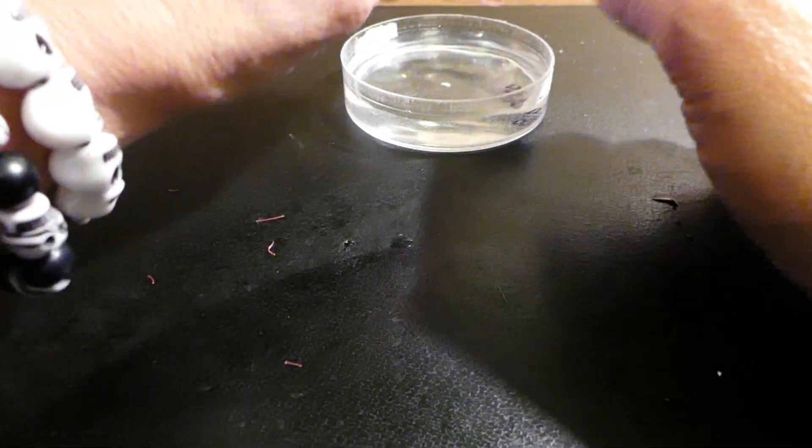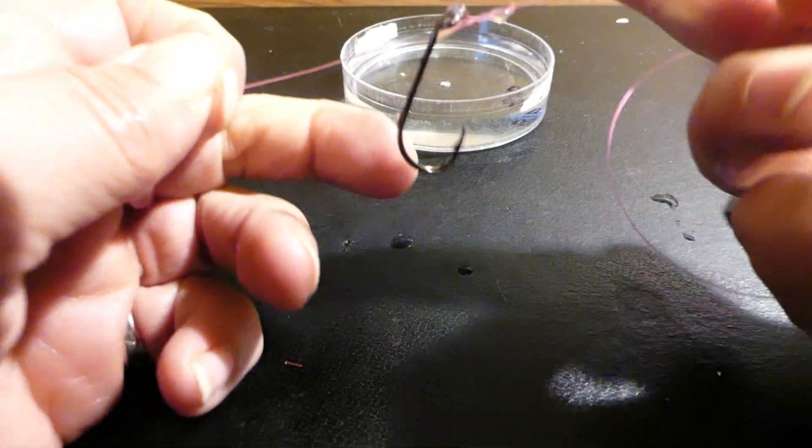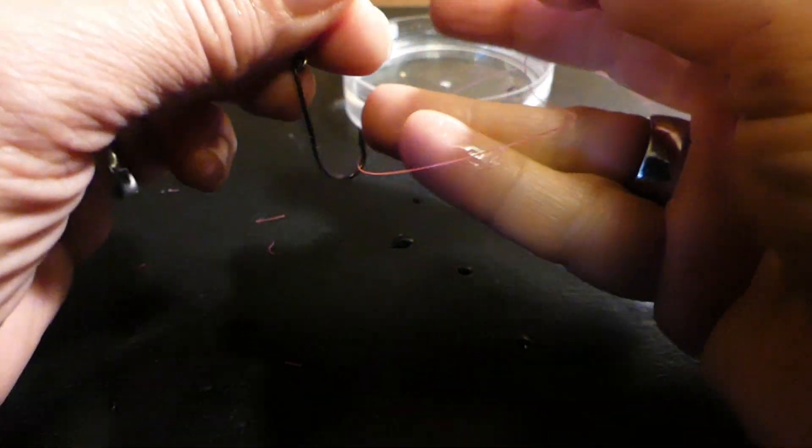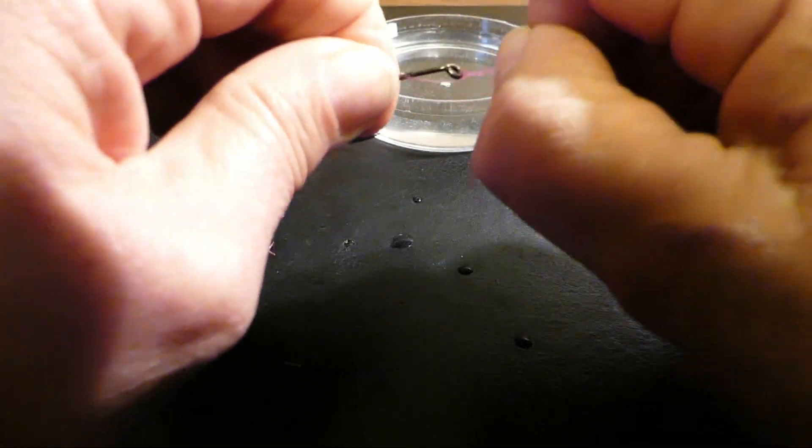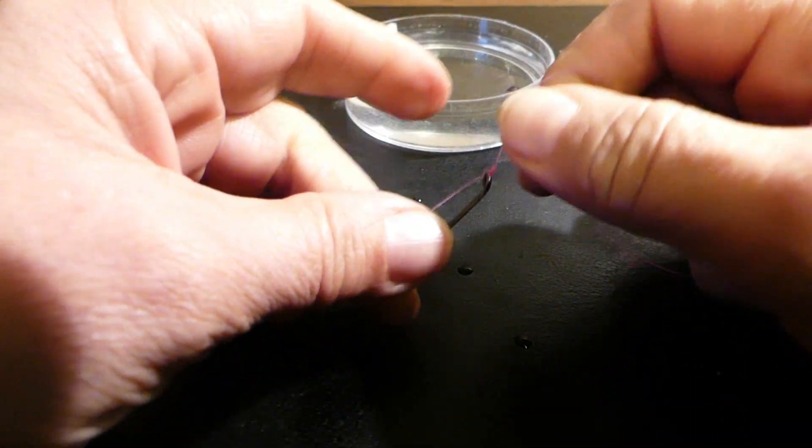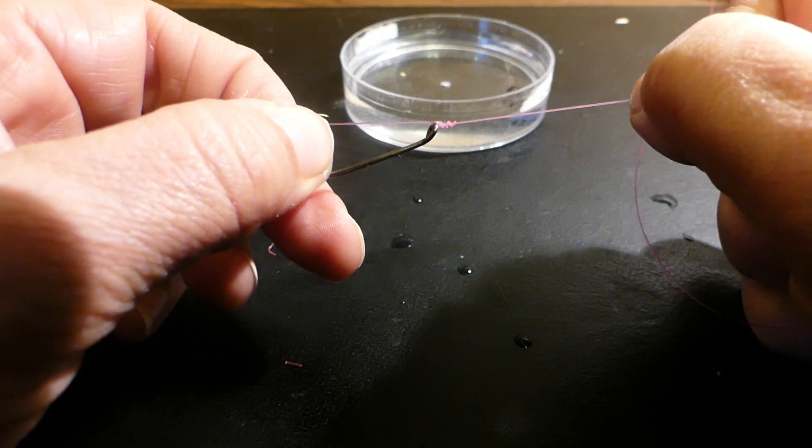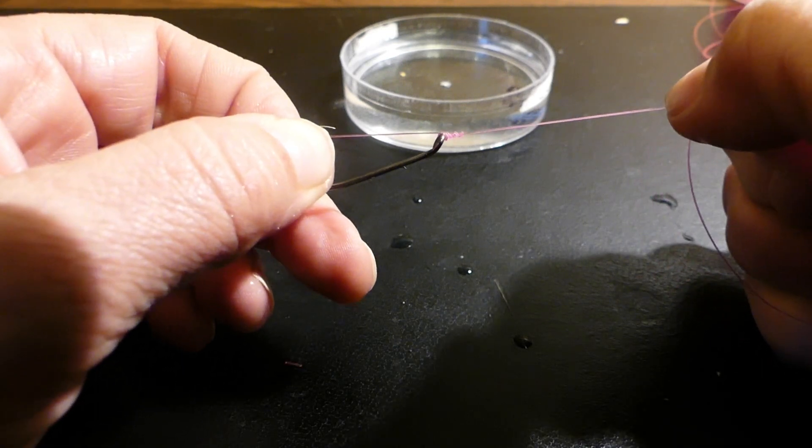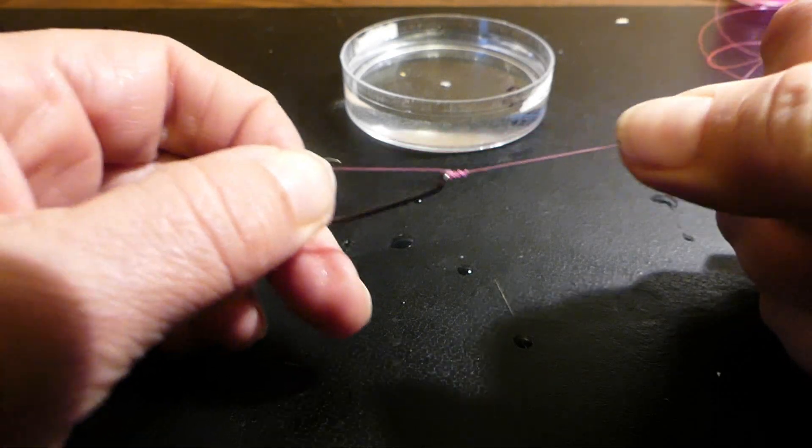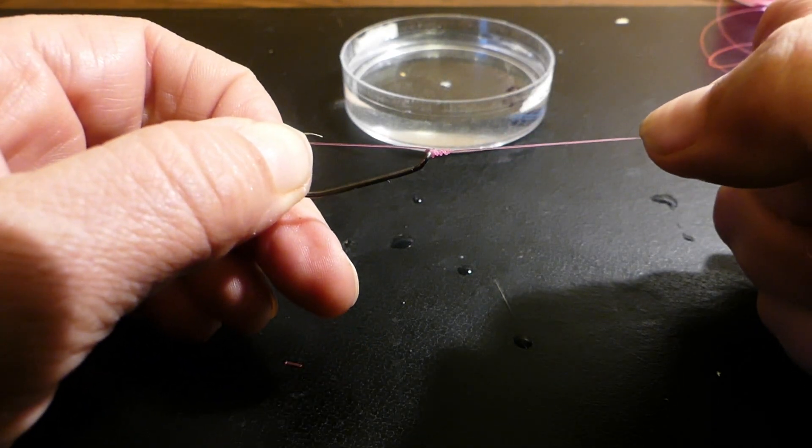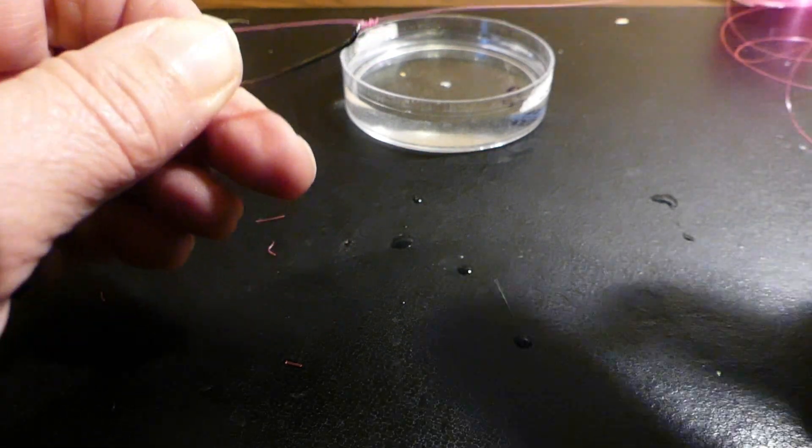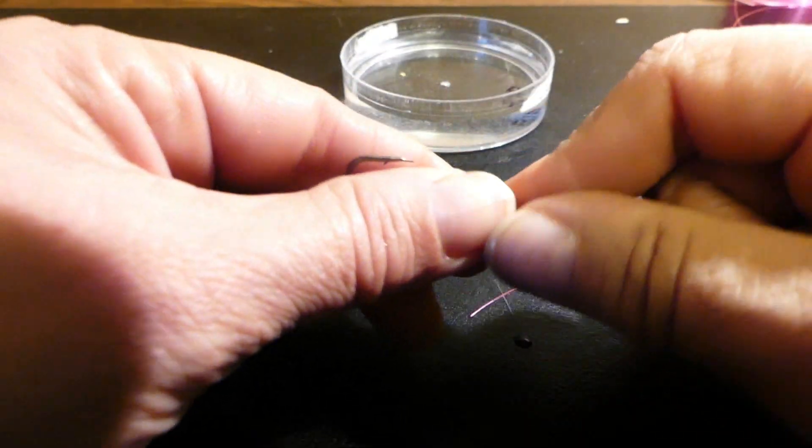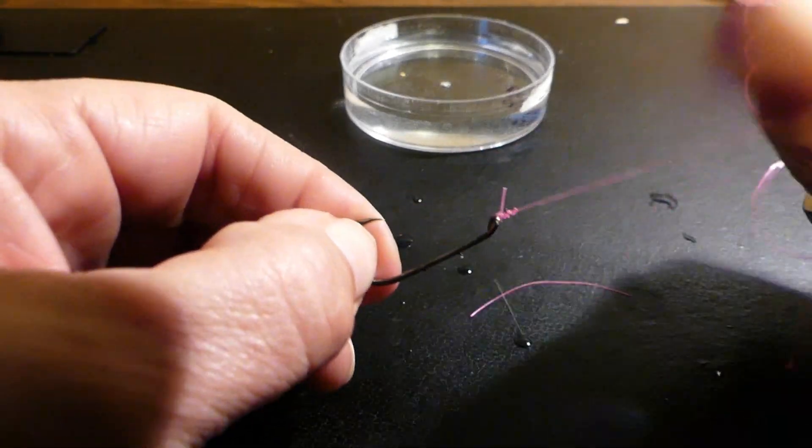Before we cinch down, once again make sure you lubricate, then pull. This just adds another loop. Tighten that up. We're going to hold that for about 10 seconds, let it lock down on itself. By passing it through that loop again, it gives another loop around the main line and also the tag line. It just makes it a little bit stronger. That's about 15% to the total strength of the line when you do that.